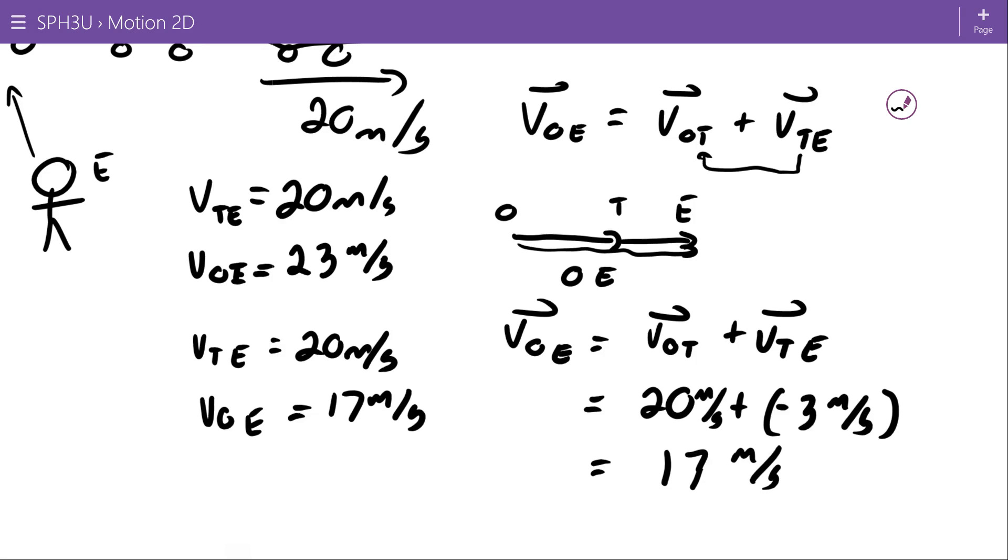This will work as a vector equation for two dimensions. And we will be using our two-dimensional component method to add vectors in both of these directions. But conceptually, that's not that important right now.